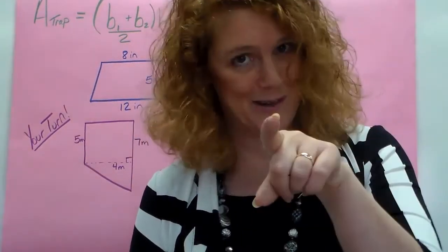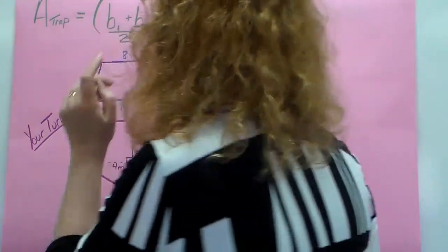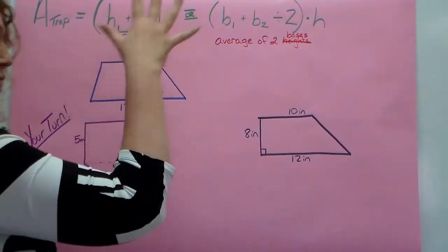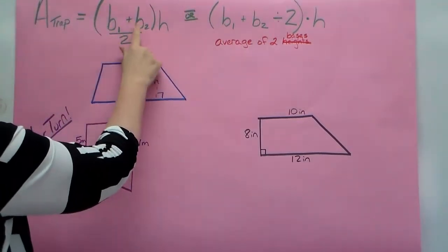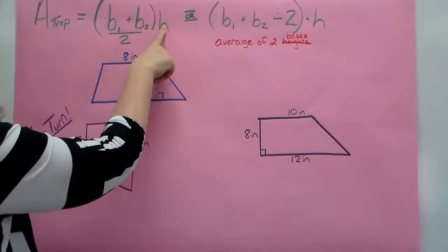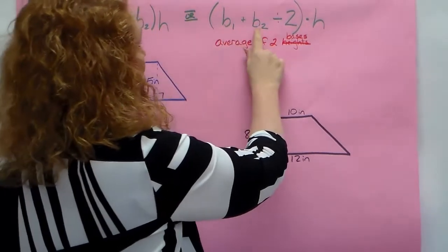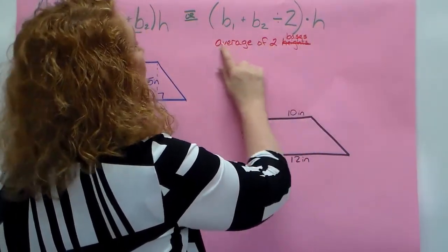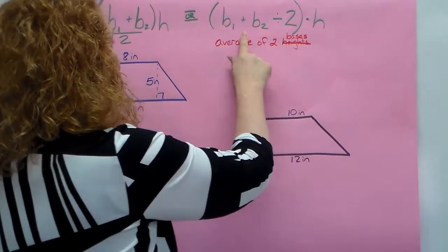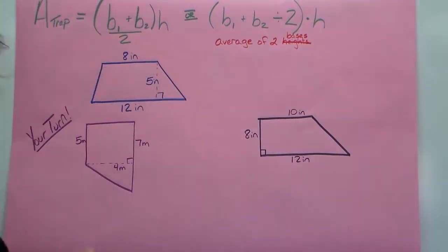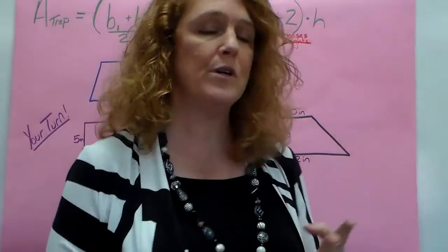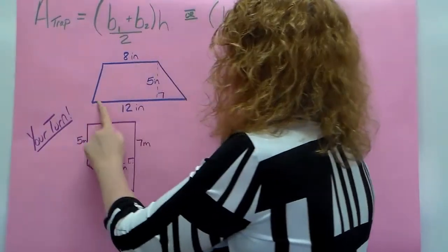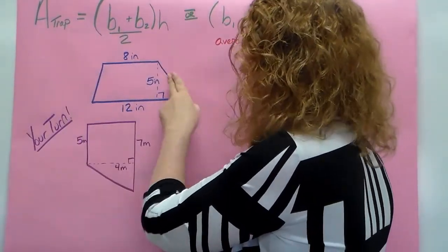So then we're on to trapezoids. Now this kind of looks scary, don't freak out. This actually says base 1 plus base 2 divided by 2 times height. What we want to do is we find the average of these two bases. So let me introduce you to the trapezoid. The trapezoid is a four-sided figure and only two sides are parallel. The other two sides are not parallel.